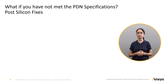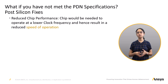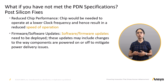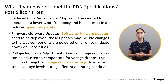What if PDN specifications are not met? When the power delivery network specifications are not met, it can result in a change in chip performance, power and functioning. Several post-silicon fixes may need to be performed. PDN spec violations can result in degradation of chip performance, addressed by reducing chip operating frequency to a lower clock frequency, ultimately slowing down operations. Software or firmware updates may also need to be deployed, including changes to the way components are powered on or off. Additionally, on-die voltage regulators can be adjusted to compensate for voltage drops by tuning regulator settings to ensure stable voltage levels during different operating conditions.